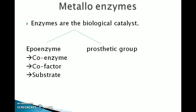So enzymes are the biological catalyst. Metalloenzymes are enzymes which contain a metal ion, composed of a protein structure called the apoenzyme and a prosthetic group which contains a metal ion. Coenzyme is a group that combines reversibly with an enzyme for a particular reaction and is then released to combine with another enzyme. Cofactor means the prosthetic group and the coenzymes are together called cofactor. Substrate means the molecule on which the enzyme acts.